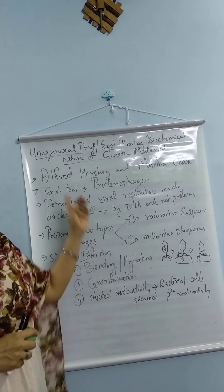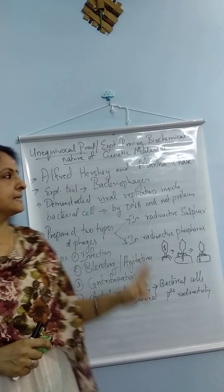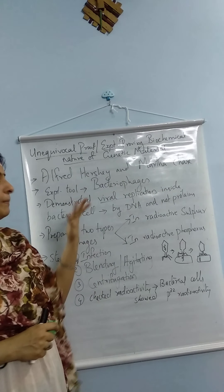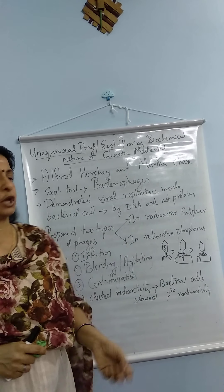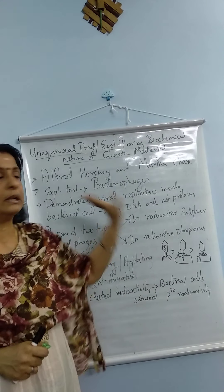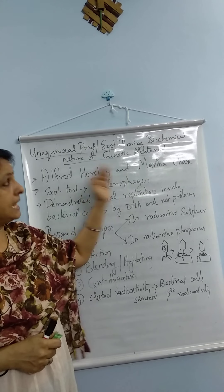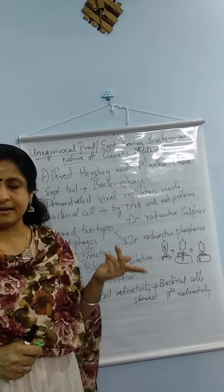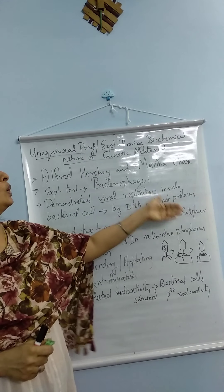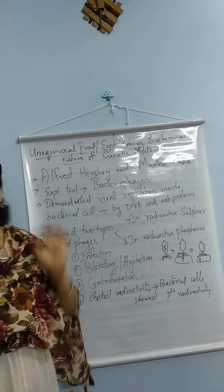It was proved beyond doubt that DNA is the genetic material by two persons: Alfred Hershey and Martha Chase. This topic is very important for the exam — you have to study the full name, Alfred Hershey and Martha Chase. This experiment is considered to be unequivocal proof for DNA as genetic material, meaning beyond doubt. It is also described as the experiment proving the biochemical nature of genetic material.